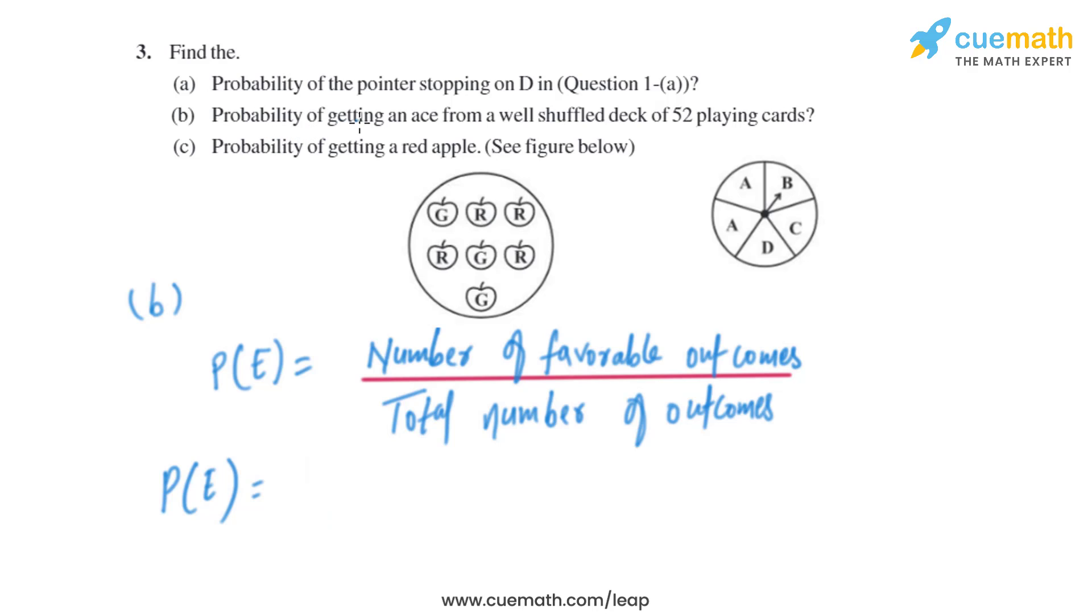Part (b): Probability of getting an ace from a well-shuffled deck of 52 playing cards. As we know, there are 4 aces, so it will be 4 divided by the total number of cards, which is 52. Simplifying, we get 1 over 13. Now let's move on to part (c).